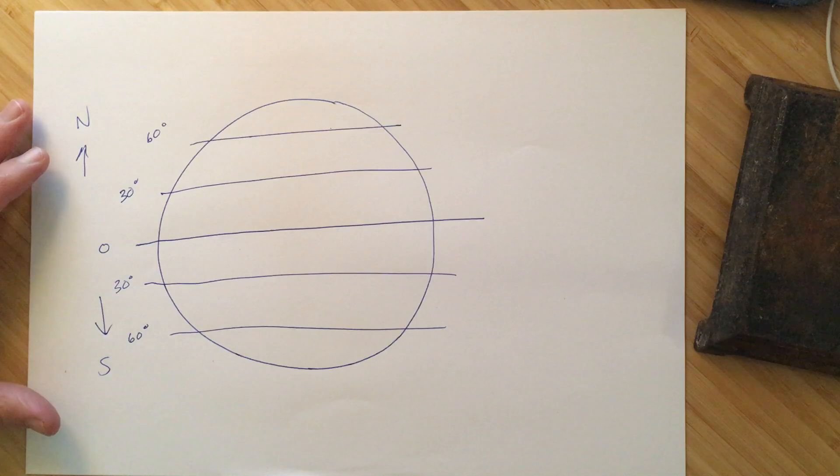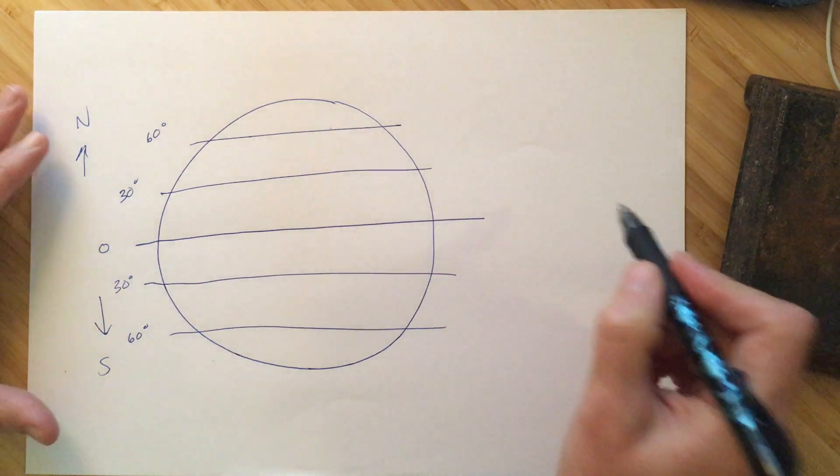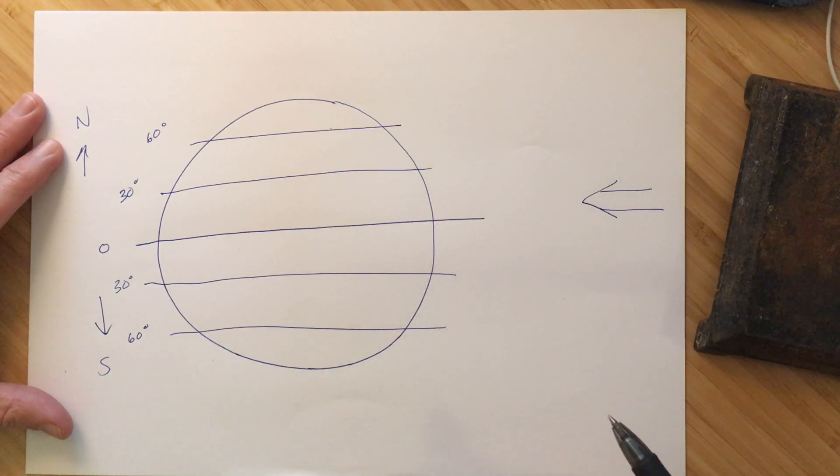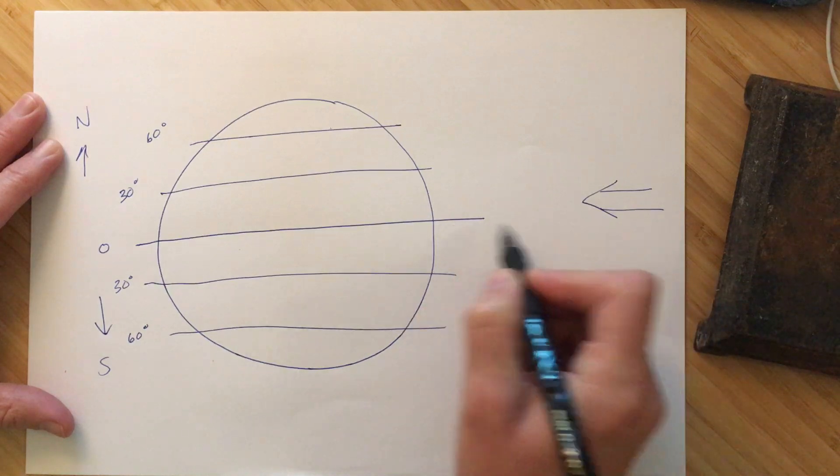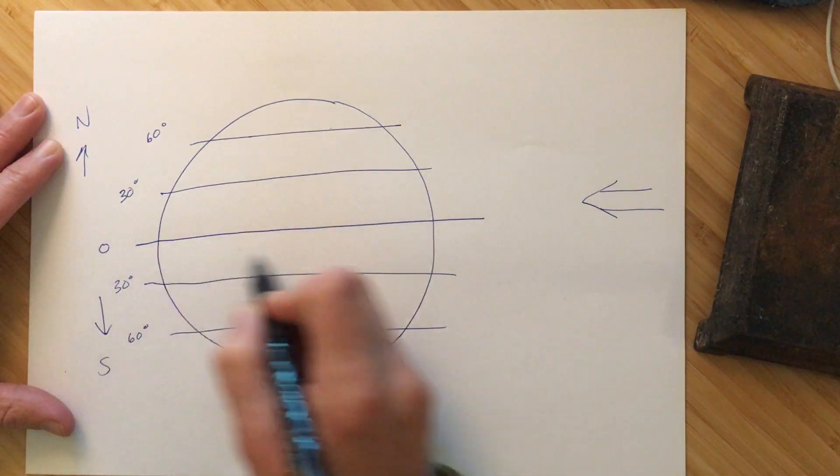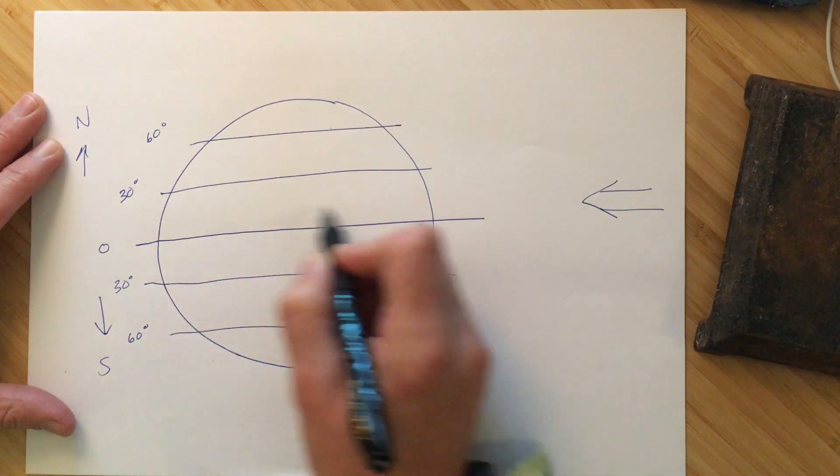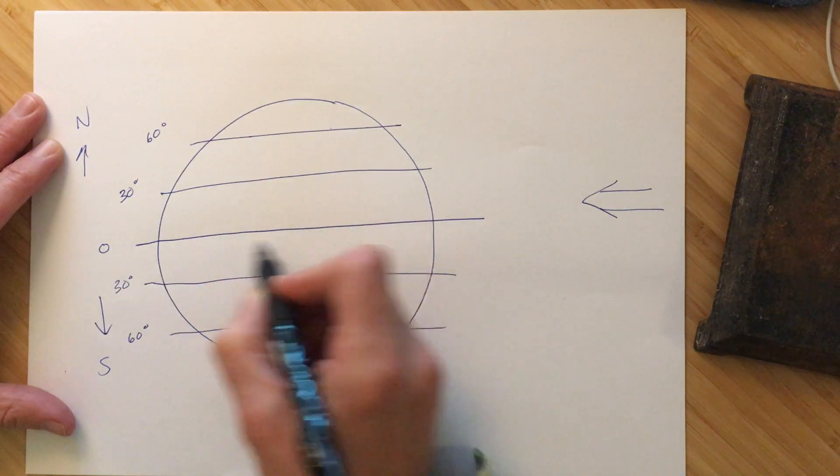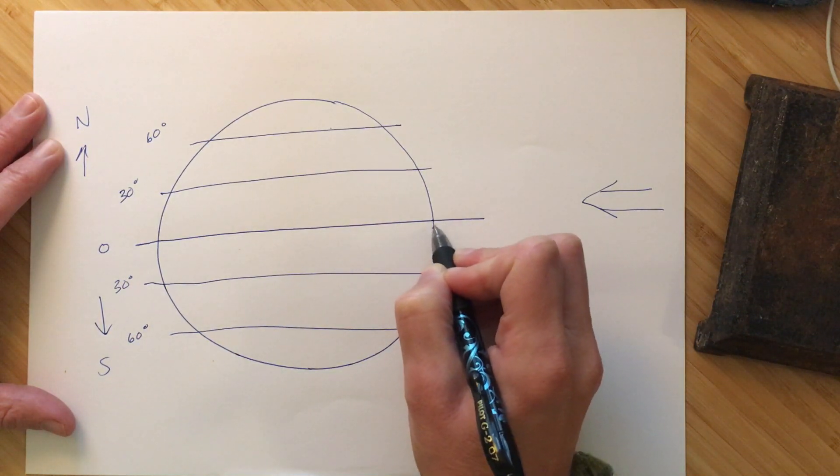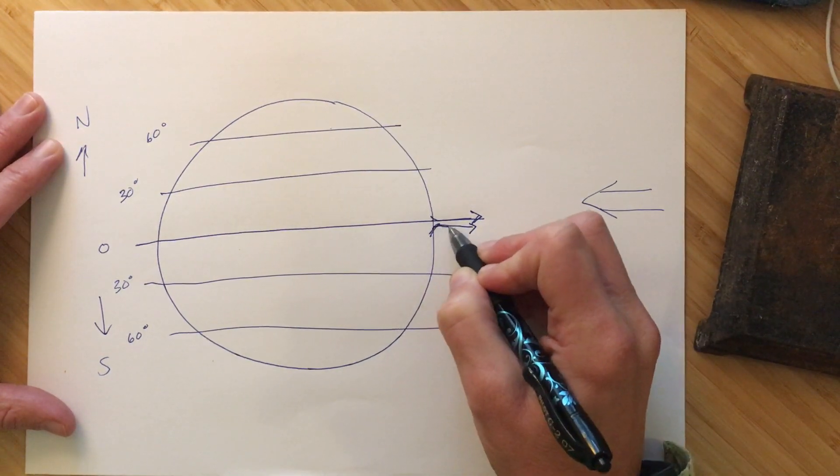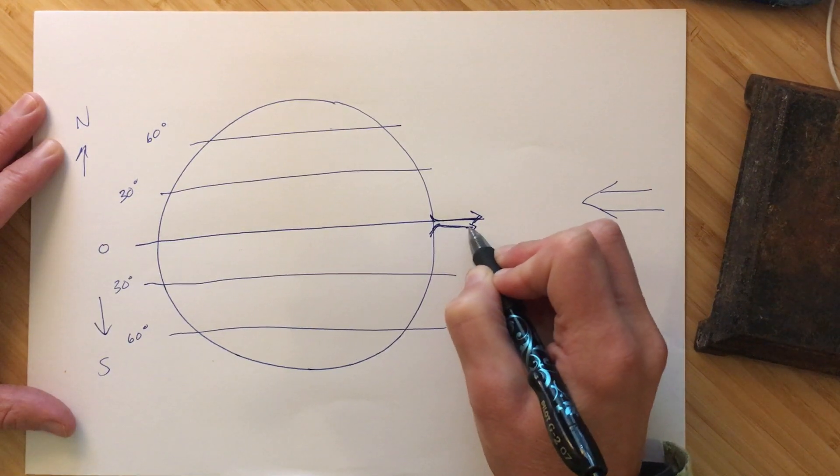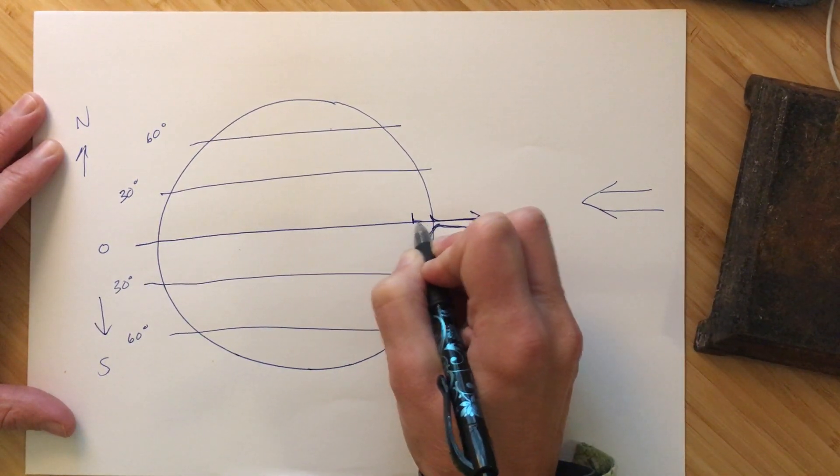So we're going to look at how global air circulation occurs, and that's going to be based on starting, we're going to start with the fact that we know that the most direct rays of sunlight are coming right along the equator here, and those direct rays of sunlight are going to warm up all that moisture along the land and in the oceans along the equator, and that's going to actually cause warm moist air to rise up.